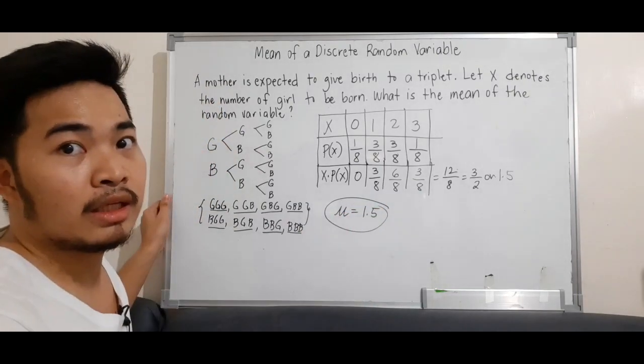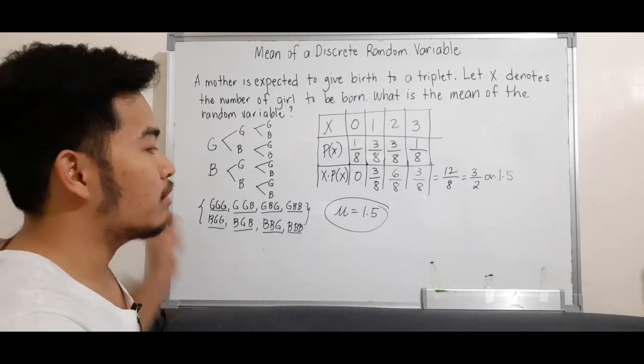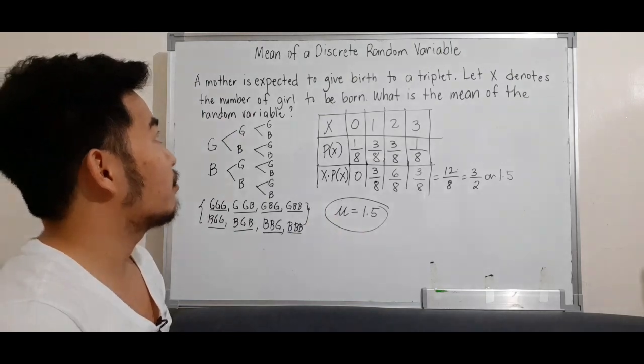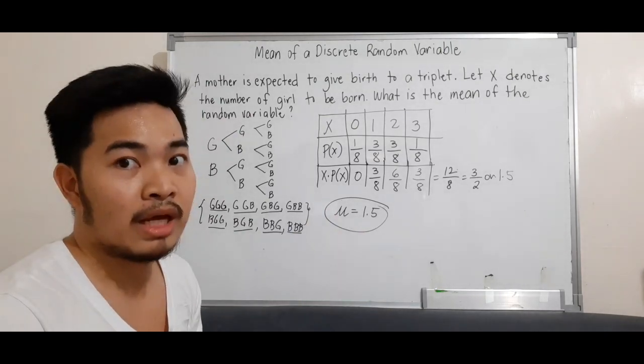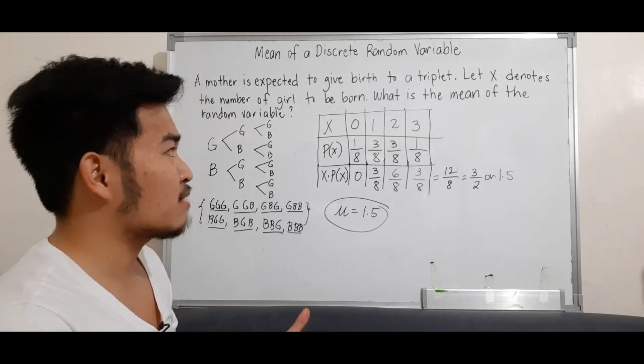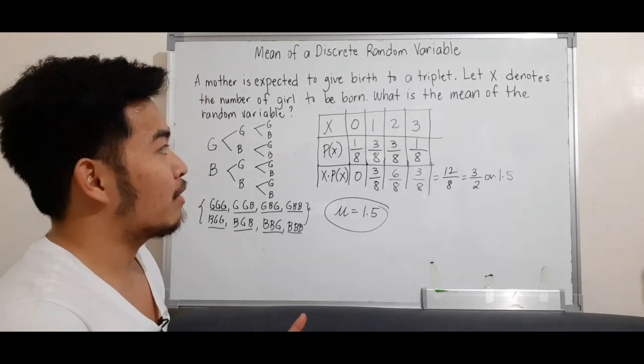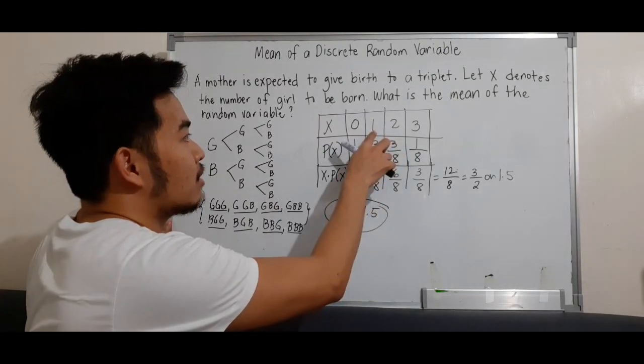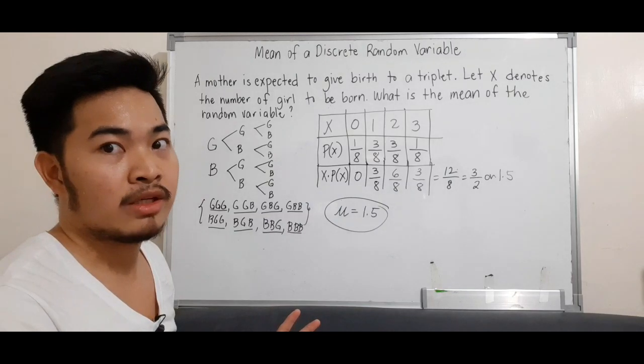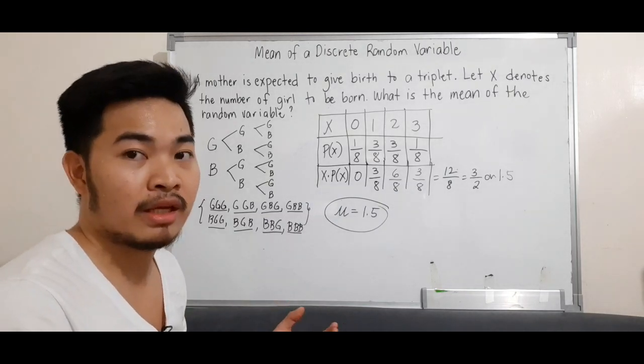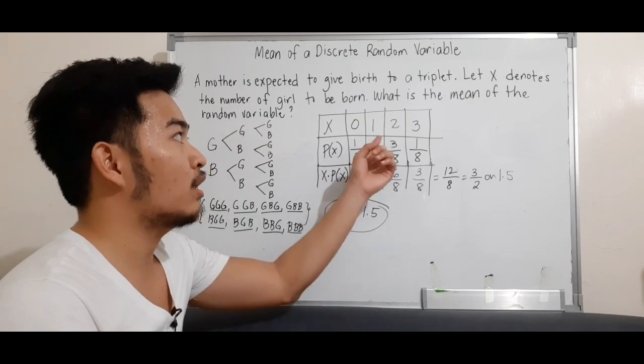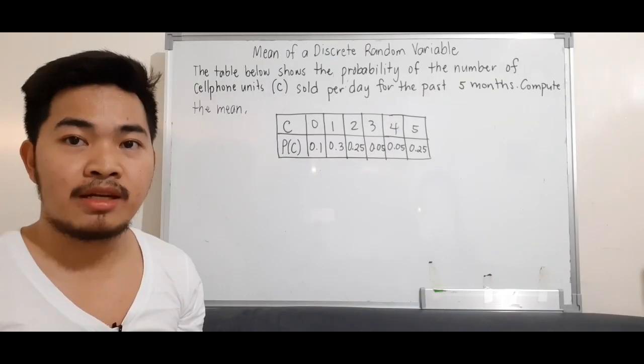What does a mean or expected value of 1.5 mean? If the mother gives birth to triplets and doesn't have an ultrasound, the expected number of girls is either 1 or 2. That's the most likely outcome, since we got 1.5, which is between 1 and 2.